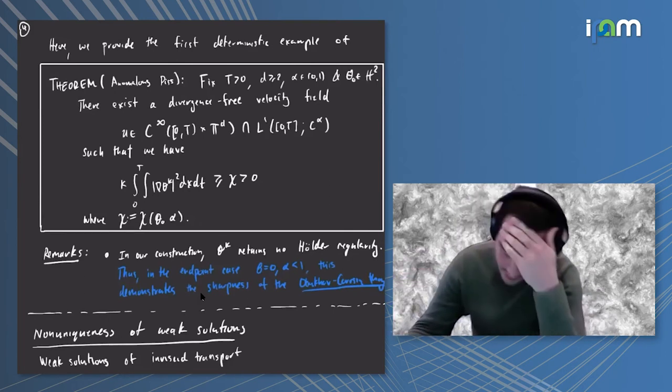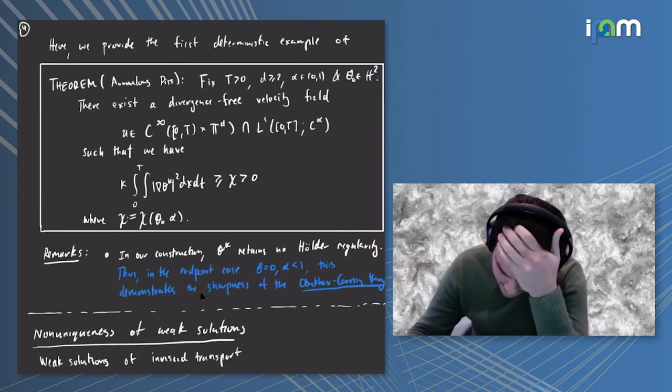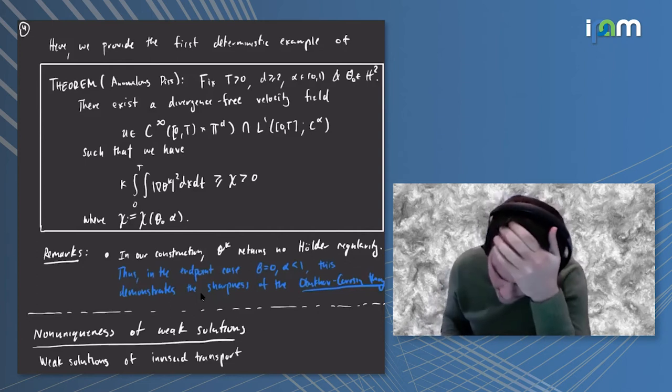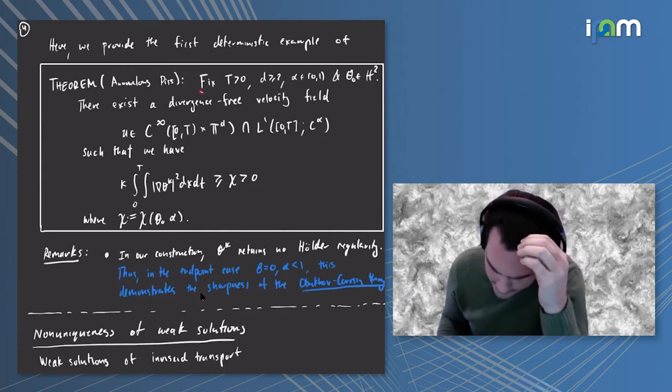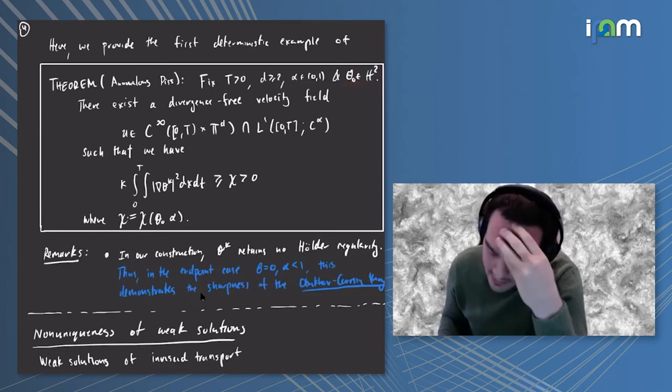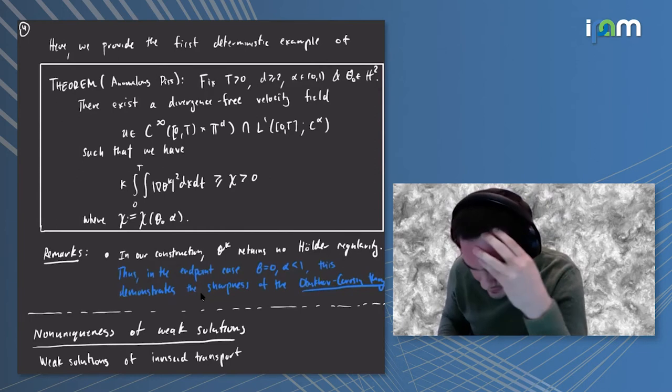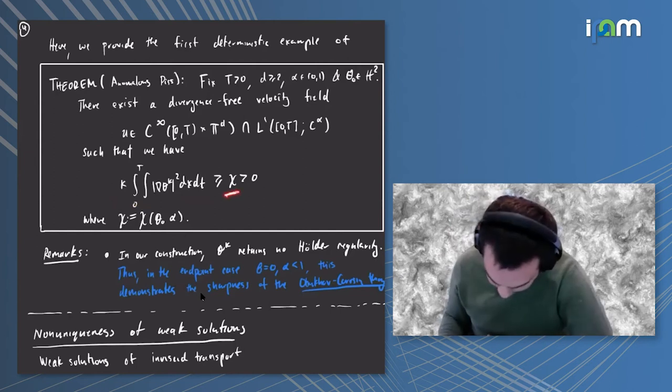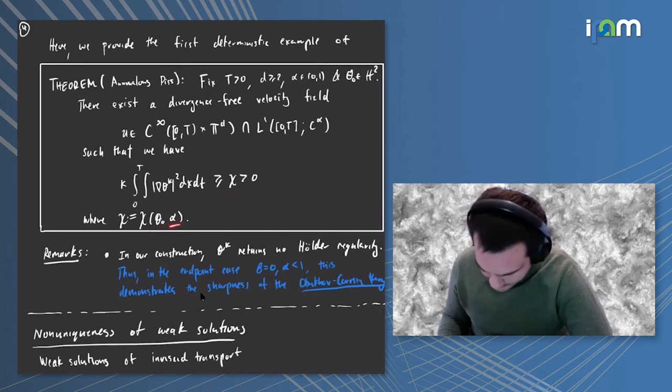The subject of the talk and the main result is an example that demonstrates this behavior. In particular, fix any t, any dimension bigger than or equal to two, any alpha between zero and one, and some initial theta in H^2. Then there exists a divergence-free velocity field u such that the scalar dissipation is strictly bounded away from zero by some number chi that can depend on the initial data and the Holder regularity alpha.